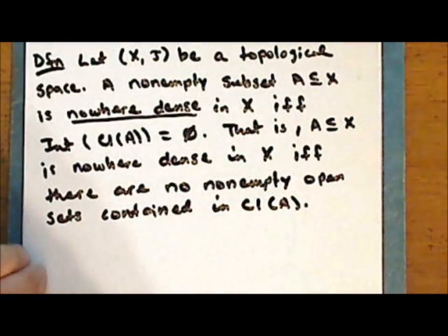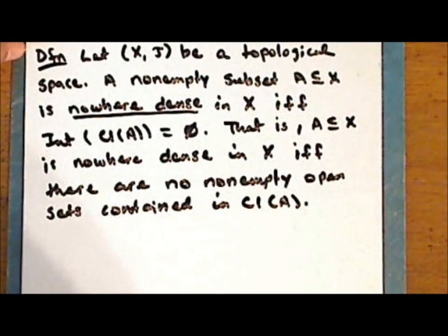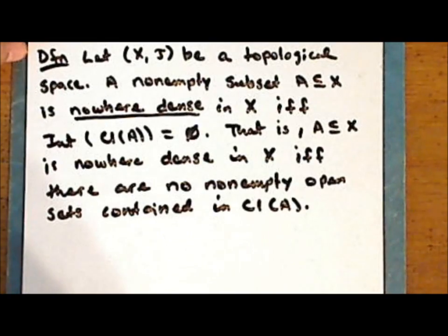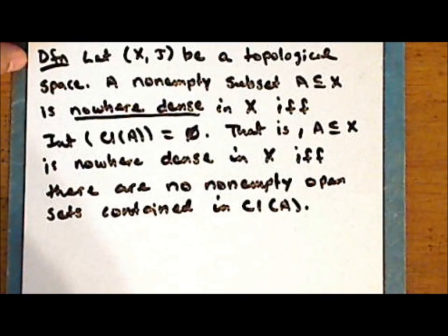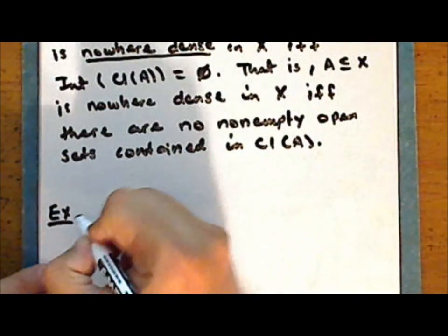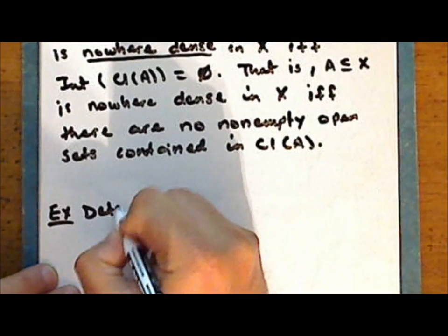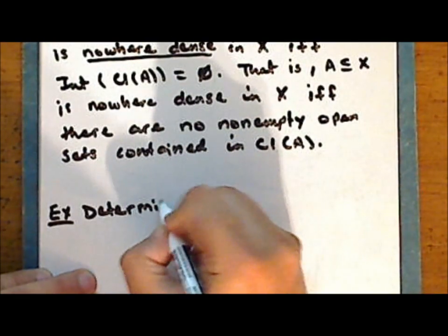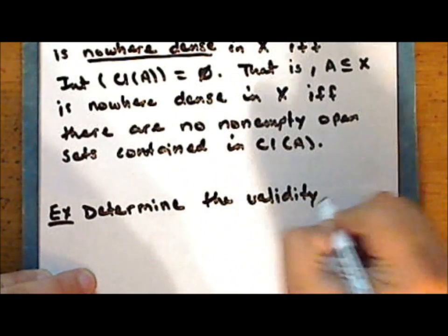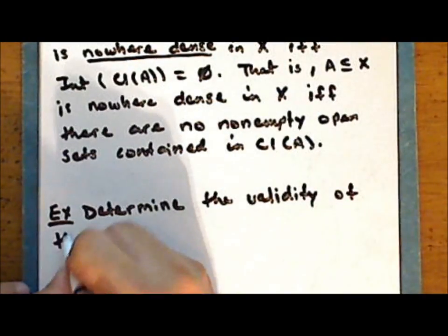Now recall that a dense set is one for which every non-empty open set contains at least one point of the given set. So a true opposite of a dense set is one for which every non-empty open set has no points in common with the given set. As an exercise, determine the validity of the following conjecture.